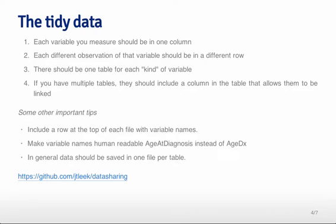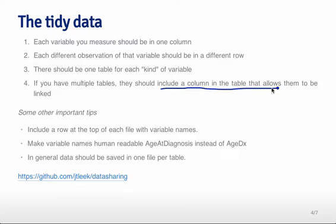The tidy data is the target or end goal of the whole process. Each variable that you've measured should be in exactly one column - one variable per column - and each different observation should be in a different row. For example, if you measure the number of tweets posted by a large number of users, you would have number of tweets in the column, and for every single user you would get the number of tweets in a different row. There should be one table for every kind of variable, and if you have multiple tables, they should include a column that allows them to be linked together - often an ID.